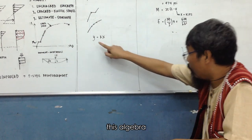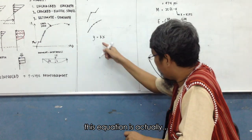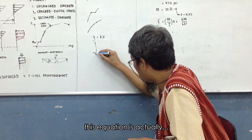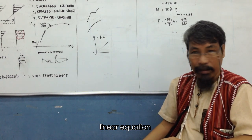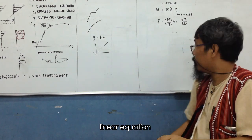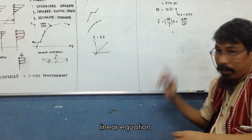This is algebraic, so this equation is actually what? Straight line, linear, linear equation, same, linear.